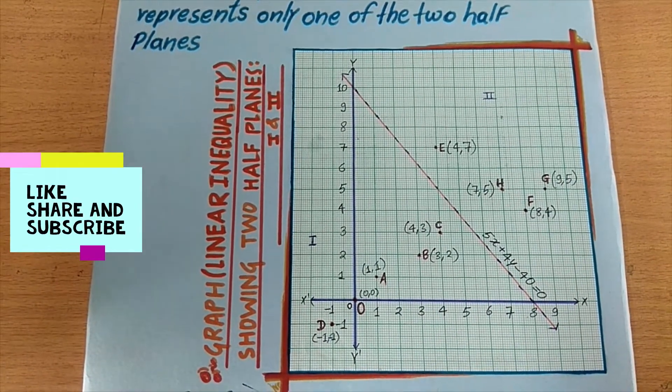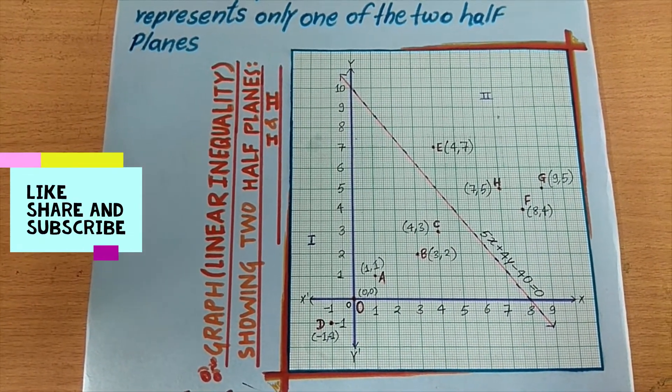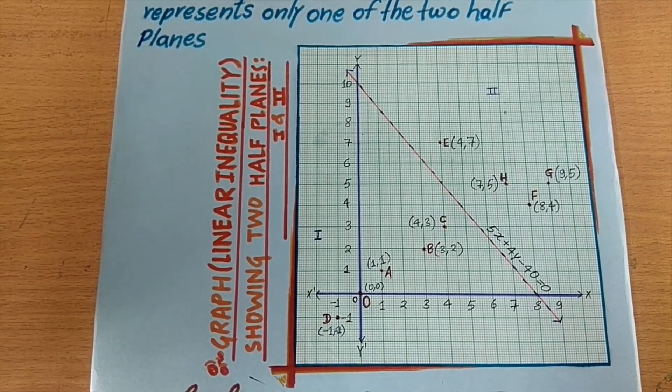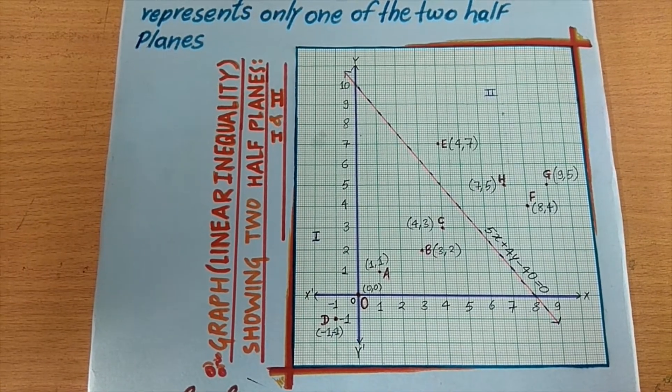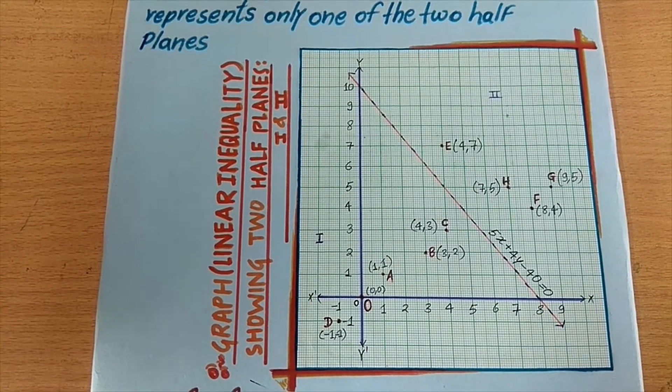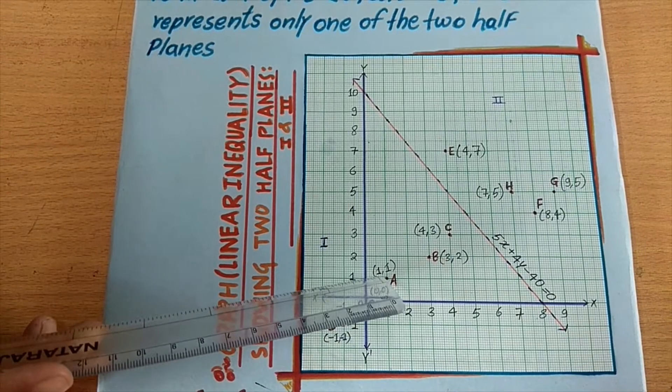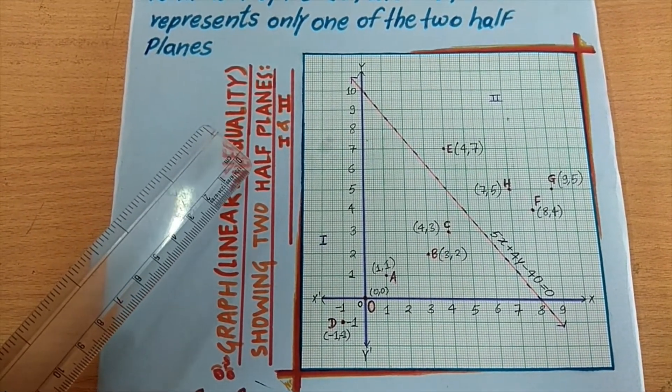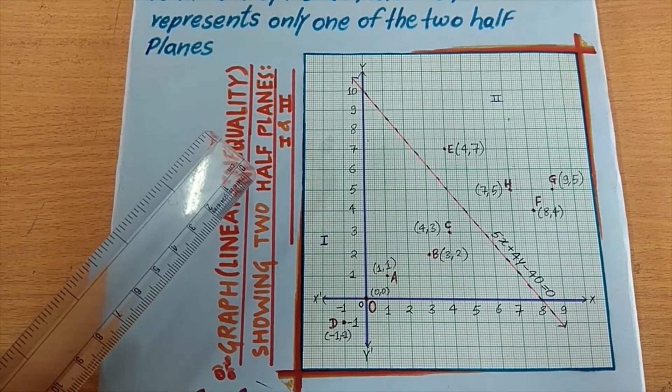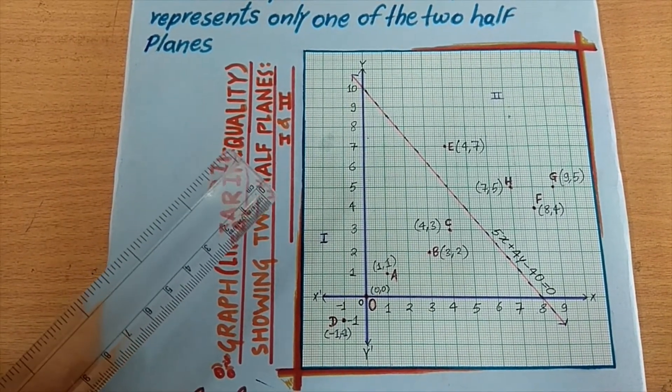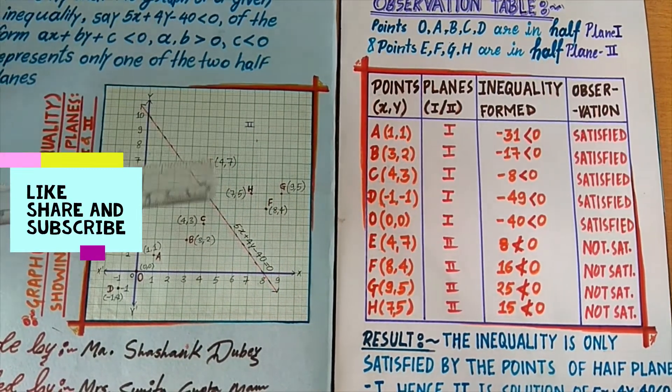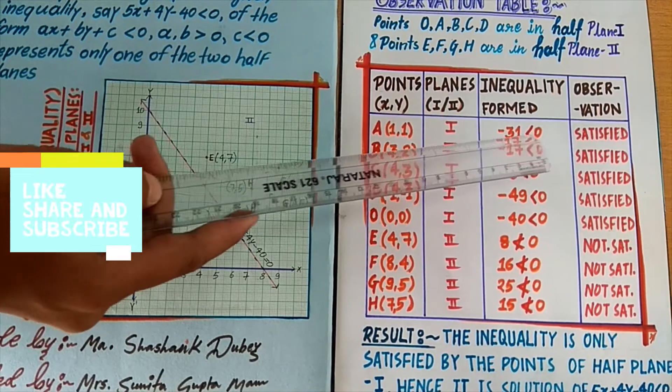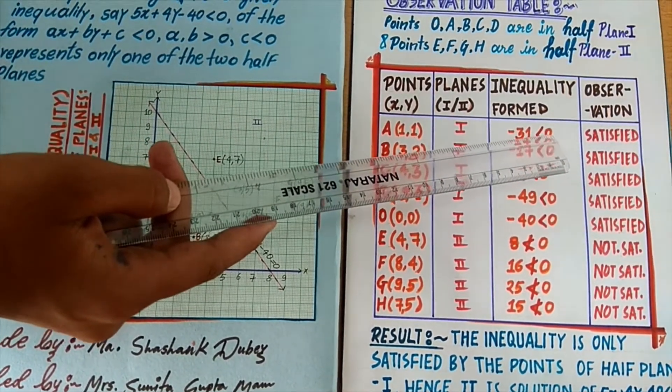Then we check if these points satisfy the inequality or not by substituting the value of x and y with the coordinates of the following points. For example, take point A(1,1), so for the inequality 5x plus 4y minus 40 less than 0 where x equals 1 and y equals 1, the inequality formed is minus 31 which is absolutely less than 0, so it satisfies the given inequality.